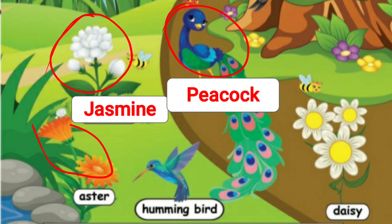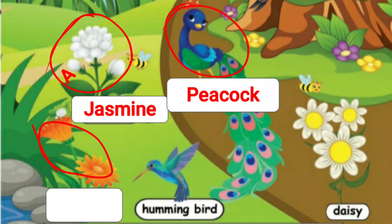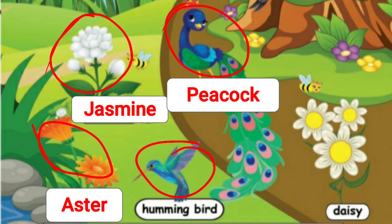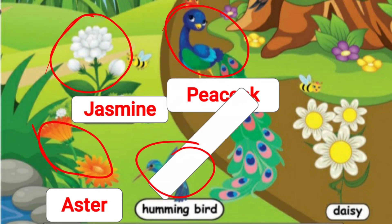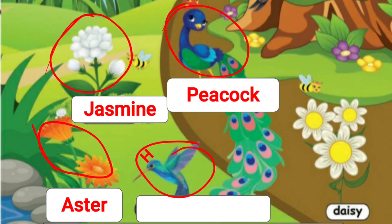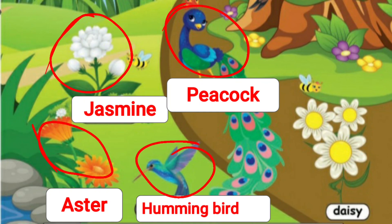And what is this? This is an aster. A-S-T-E-R. Aster. And what is this? This is a hummingbird. H-U-M-M-I-N-G-B-I-R-D. Hummingbird.